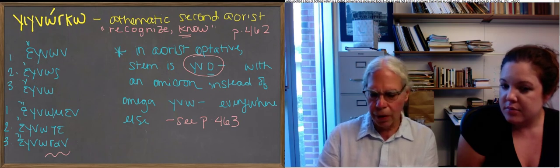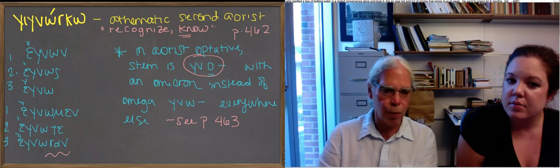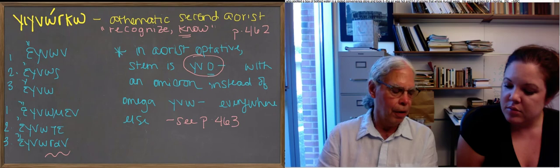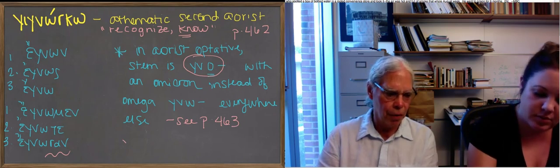The one thing that doesn't show the omicron is all the forms of the imperative, except for the third person plural imperative. So you have this archaic, the ending for the second person singular imperative, the most common form, gnothi.